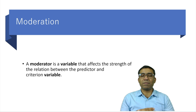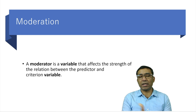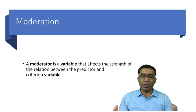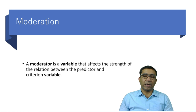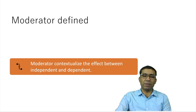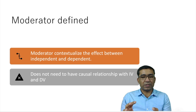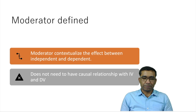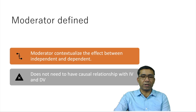A moderator is a different kind of intervening variable. A moderator is a variable that affects the strength of the relationship between predictor and criteria — that is, between independent and dependent variables. It can strengthen or weaken that relationship. Moderator contextualizes the effect between dependent and independent variables, showing why and how the strength of the relationship can change. Importantly, a moderator does not need to have any causal relationship with the independent or dependent variable.